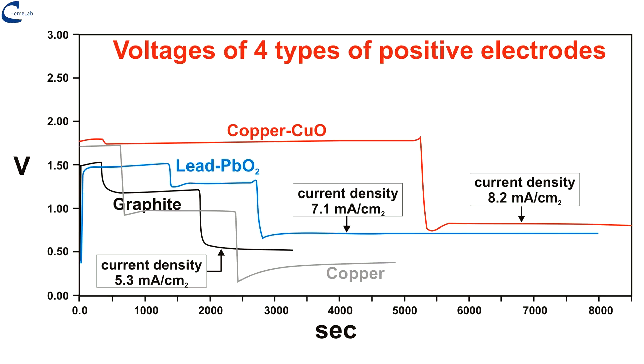The electrode that provides the highest performance is that of copper-copper oxide 2. With a load of 10 ohms it delivers 0.82 volts with a current density of the electrodes of 8.2 milliamperes per square centimeter.